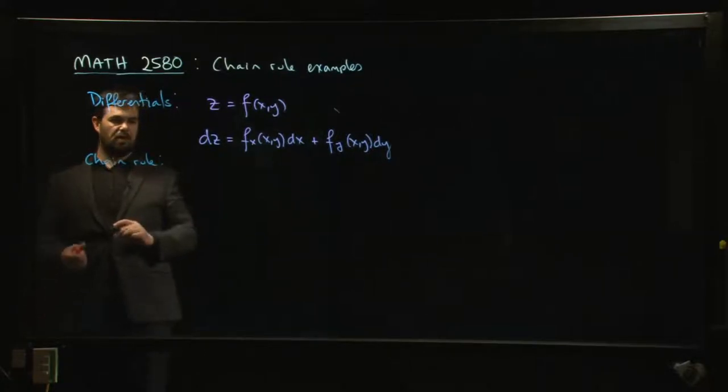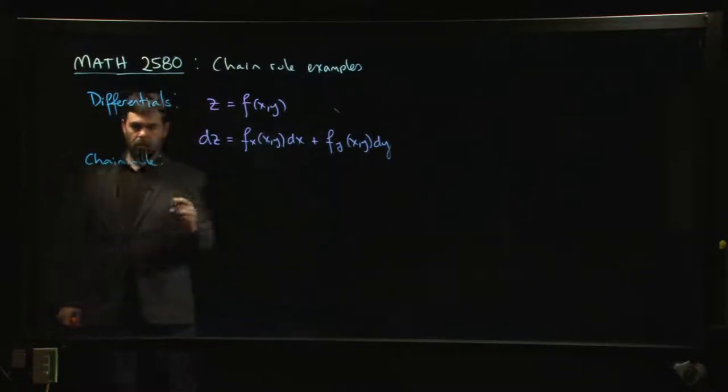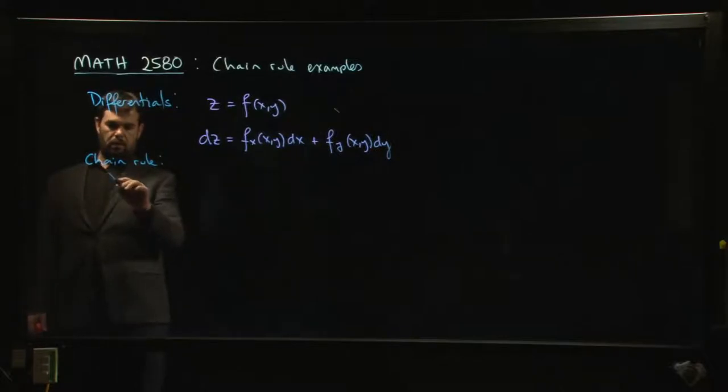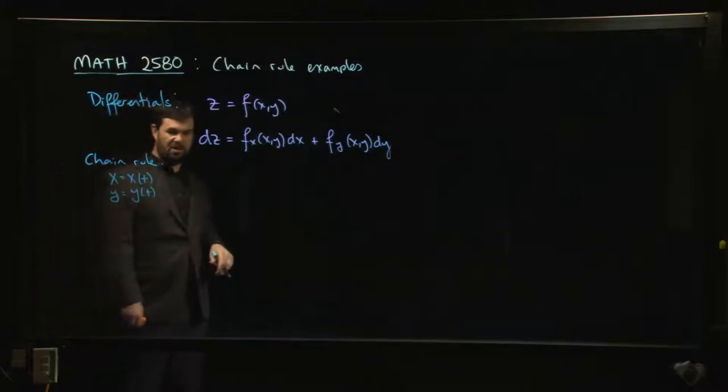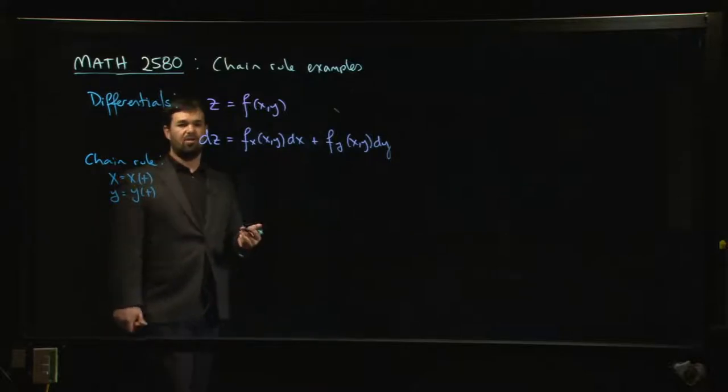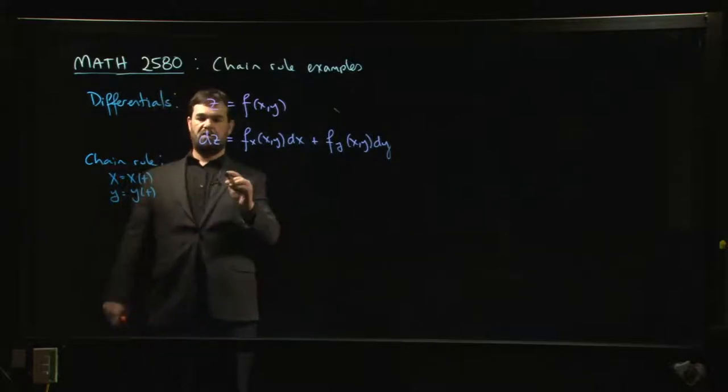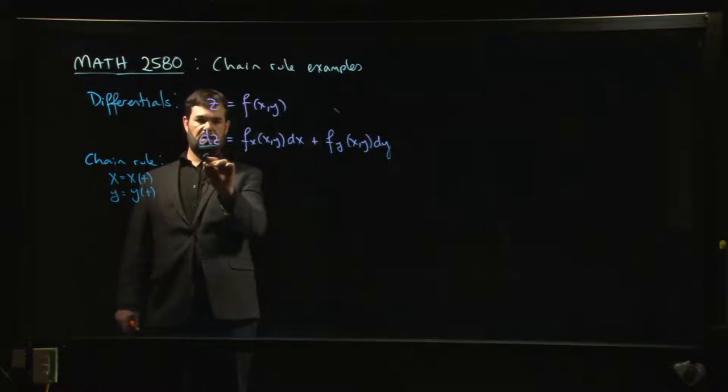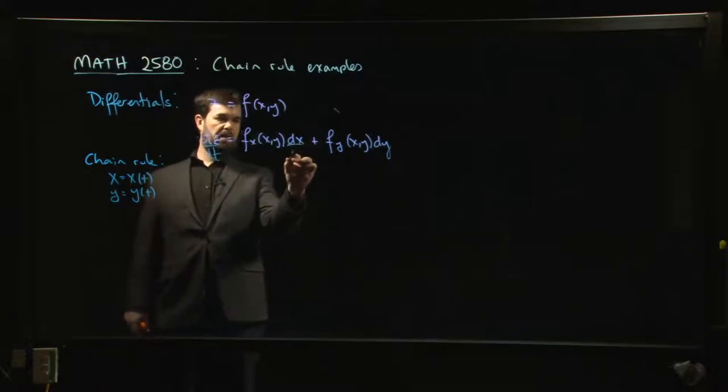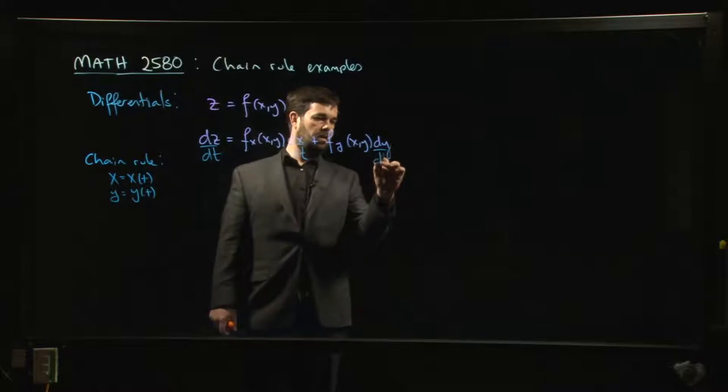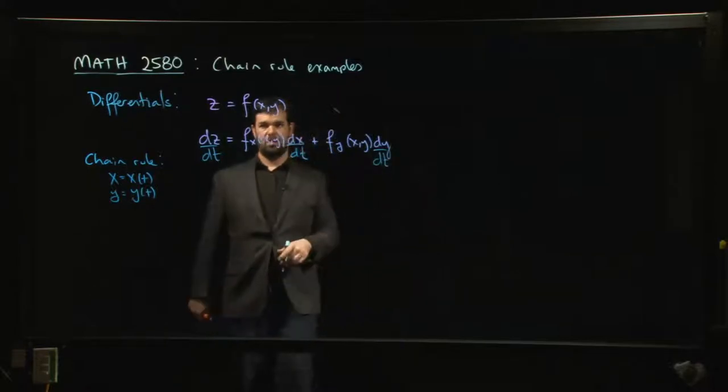Now suppose you want to take this differential and turn this into chain rule. Well, here's a sneaky thing you can do. We're going to work in this scenario where x is now x of t, and y is y of t. I know this is bad use of notation, but I'm going to cheat anyway. So how do I turn this differential into chain rule? That's easy enough. Divide by t. And boom, you have chain rule.